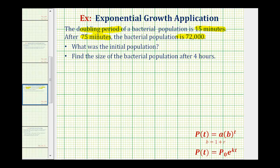Because we're given information about the doubling time, we're going to model the population using an exponential function in this form here: P(t) equals a times b raised to the power of t. Because we're given information about the doubling time, we're going to let the base b equal two. We could also use the form with base e, but for this example we are going to use this form here.